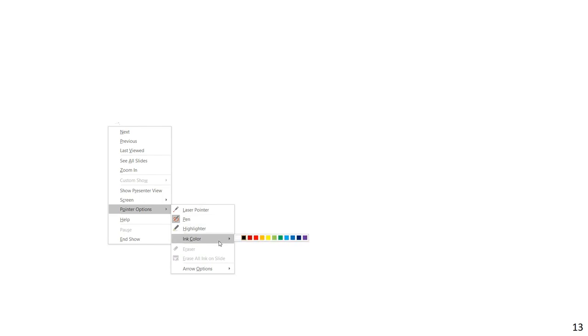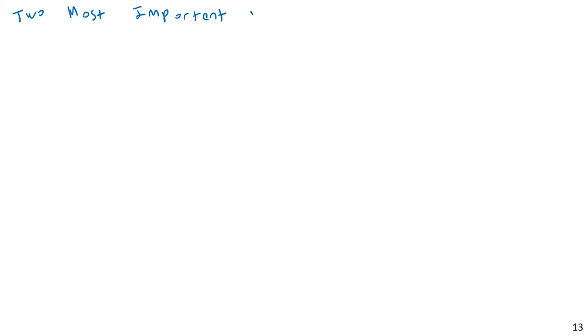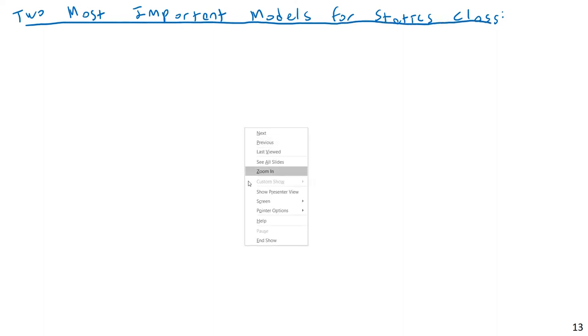With that, I'd like to talk about the two most important models for engineering statics class — and these are both completely impossible, but that's okay. The two most important models are the rigid body assumption and the point particle assumption. The first is the point particle model. In this class, we will treat objects as either a point particle or a rigid body.